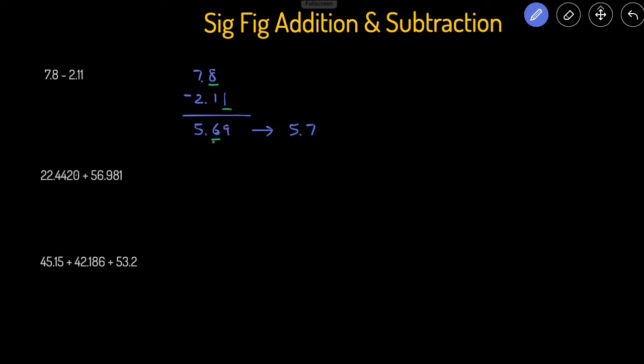All right, in the next problem, to start we'll just line everything up and then add the numbers together. Then we'll underline the last sig fig in each of the numbers. That'll be the zeros—the last significant figures, because zeros in the end will count if there's a decimal point. The last significant figure in the second number is going to be the 1, and the 1 is more to the left than the zero, so we're going to carry that bar down here.